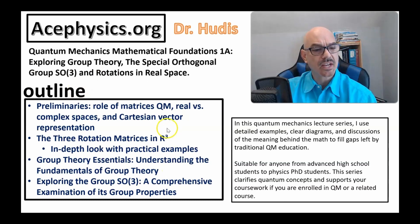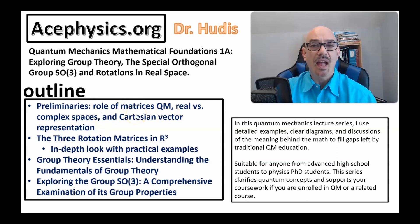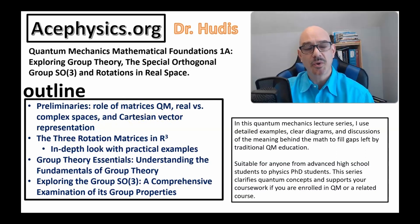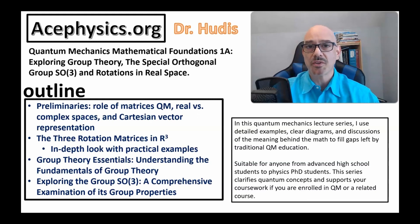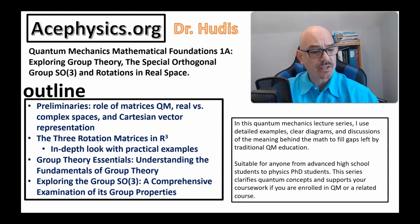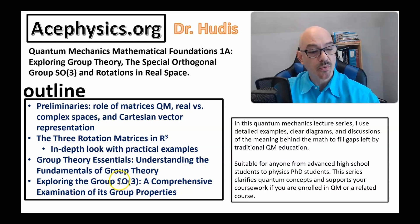The outline for this lecture is as follows. We'll start out with some basic preliminaries: the role of matrices in quantum mechanics, real versus complex space, and Cartesian vector representation. Then I'm going to take an in-depth look at the three rotation matrices in R3, which are also the generators of rotation for the group SO3. And then we'll get into the group theory essentials and explore the group SO3.